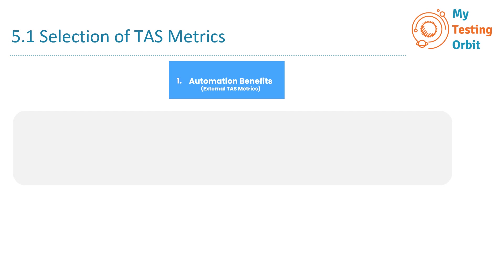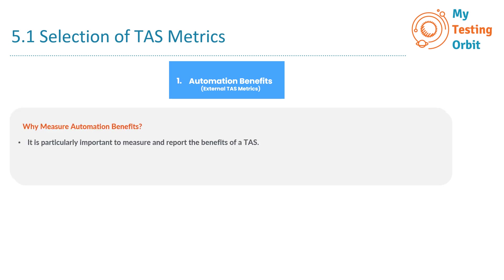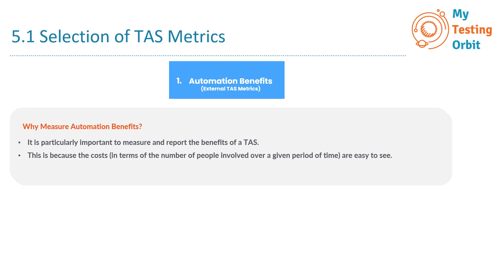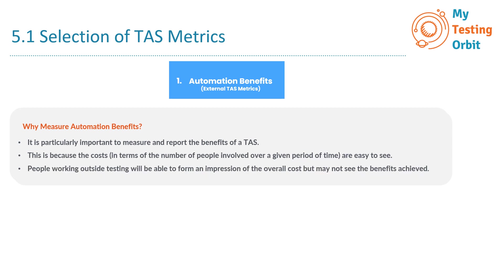Let's look at the external TAS metrics one by one, starting with automation benefits. It is particularly important to measure and report the benefits of a TAS because the costs — in terms of the number of people involved over a given period of time — are easy to see. Think of your TAS as a toolkit you have carefully assembled; you have put in time and effort to make it work seamlessly.